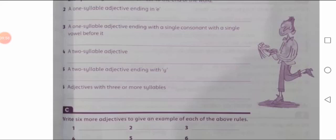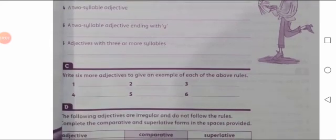Number six is adjectives with three or more syllables, with no condition for the ending letter. For example: musical has three syllables. Innocent also has three syllables. Beautiful — is there three or four? Beautiful has four syllables. Irregular also has four syllables. So musical and innocent have three syllables, and beautiful and irregular have four syllables.